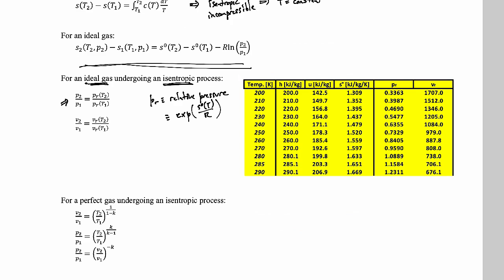Similarly, if you go back to lecture 25, you can find an expression relating the specific volumes. So v2 over v1 is the relative volume at temperature 2 over the relative volume at temperature 1. Again, it's not really a volume, but we call it a relative volume because we use it to find specific volumes. Again, these two expressions are only valid for an ideal gas undergoing an isentropic process.